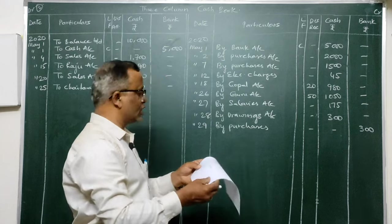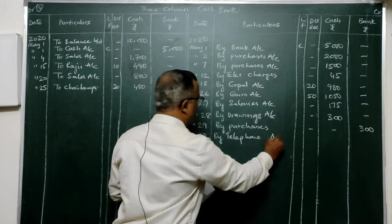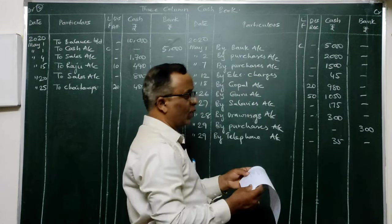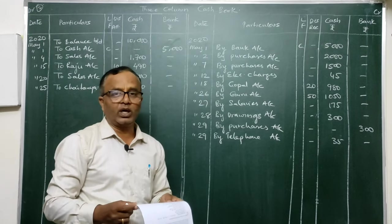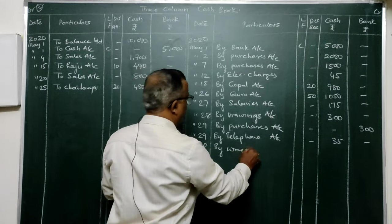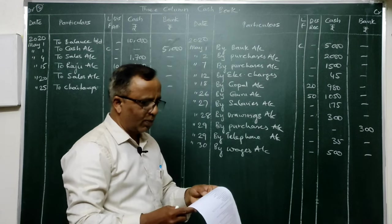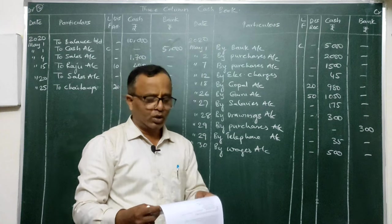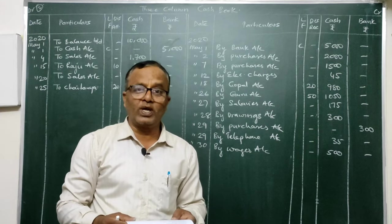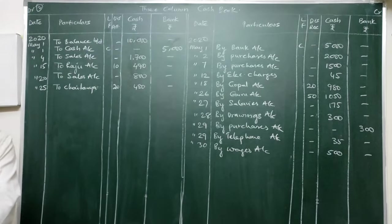On the 29th: paid telephone charges — Entry: Telephone Charges Account Dr. To Cash — 35 in cash column. Paid wages — Entry: Wages Account Dr. To Cash — post 'By Wages' — 500 in cash column. Drawn goods for personal use — Entry: Drawings Account Dr. To Purchases — neither cash nor bank account involved, so no posting in the cash book.